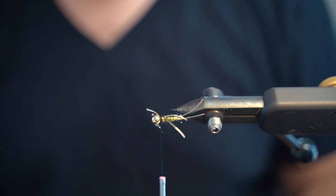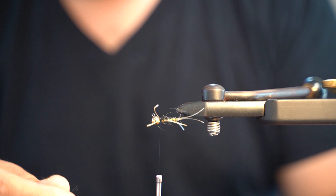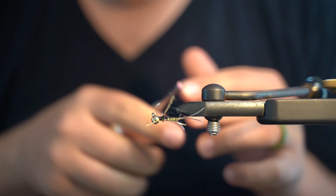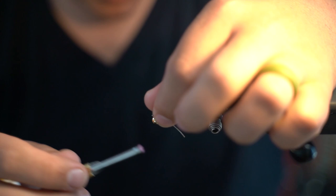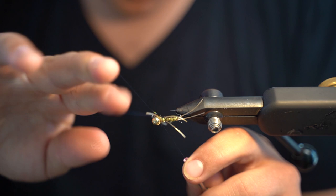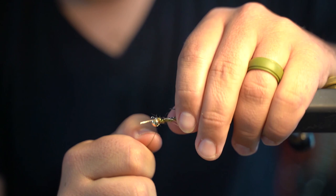Then I'll take a little bit more of this dub, and this is just going to mostly be to finish the fly but to cover any lax thread wraps out there. Then I'll do a couple right behind the bead. Now I'm going to whip finish like so, pull that tight.